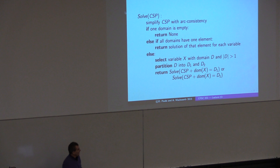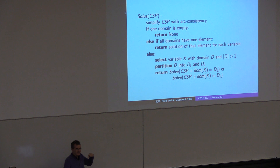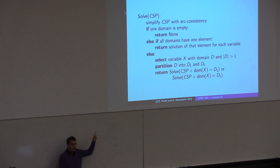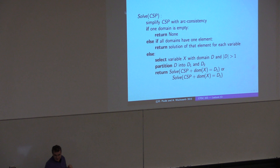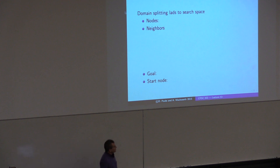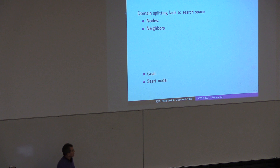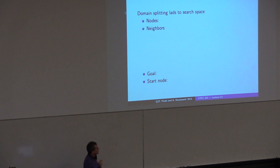What you eventually want is for someone to describe a high-level algorithm like this and for you to be able to go one level deeper. The other way to view this is domain splitting as search. When we defined a search problem, we said nodes, neighbors, goals, and start node. So what are the nodes here? They correspond to arc-consistent domains — a node here is all of the domains.